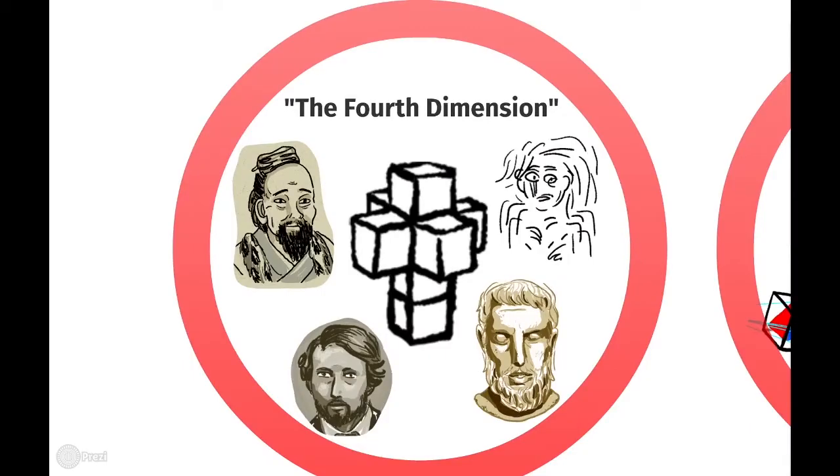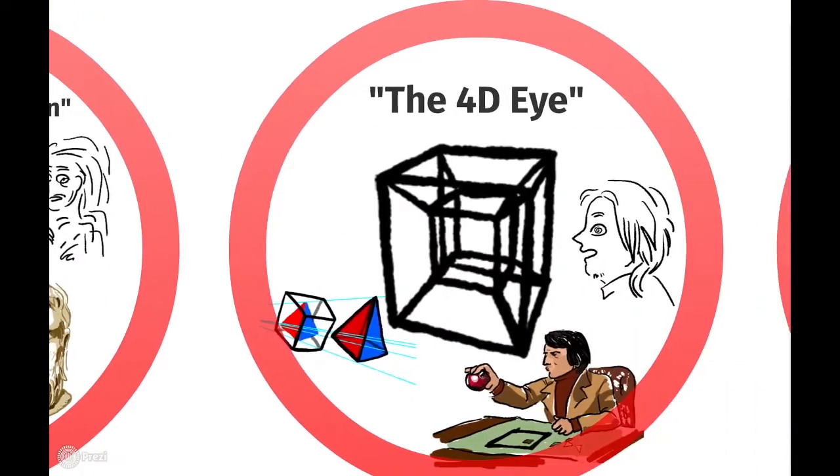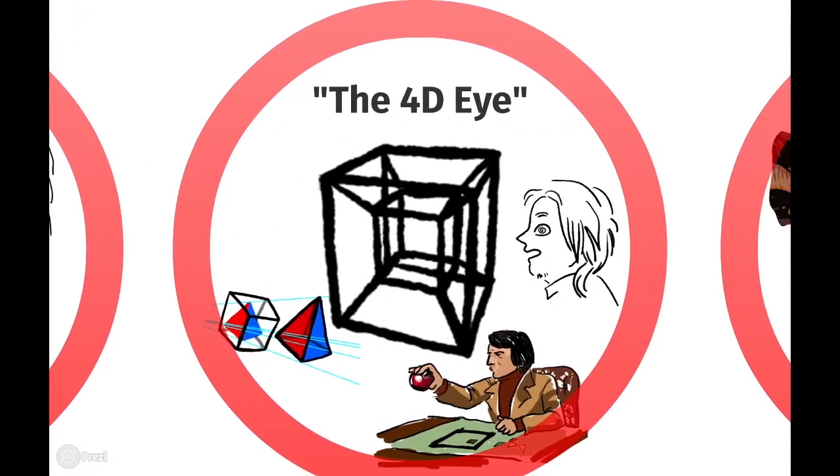The fourth dimension is basically an introductory chapter where I go into the history of the fourth dimension of mathematics, religion, philosophy, and art from antiquity to the present. Here I took some little screen grabs of some famous figures that I go over in that section. In the 4D I, I basically explain using geometry what the fourth dimension is and how to visualize it analogically.